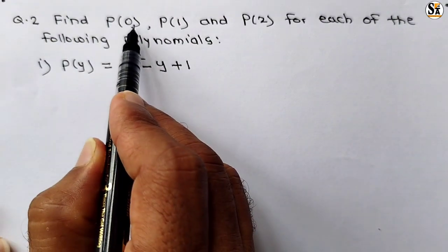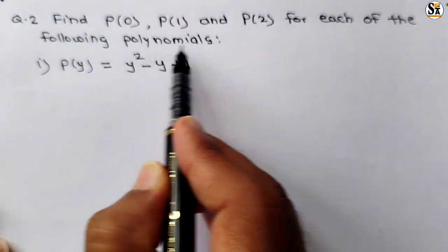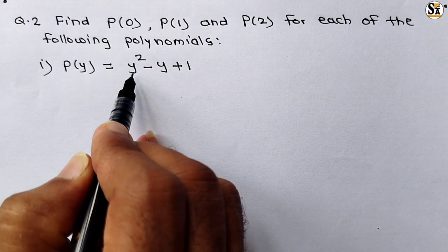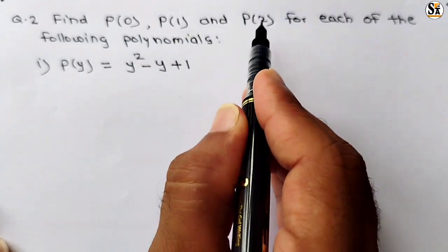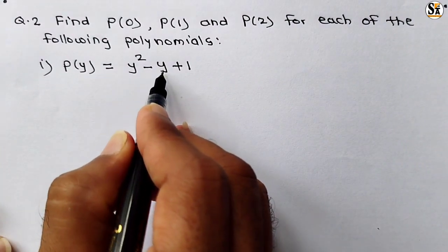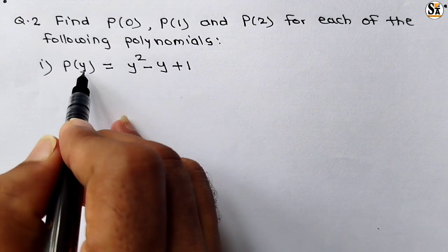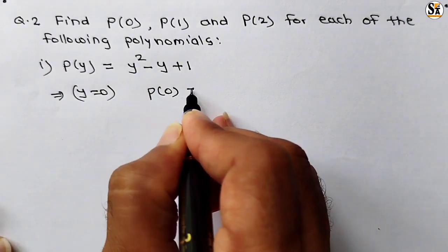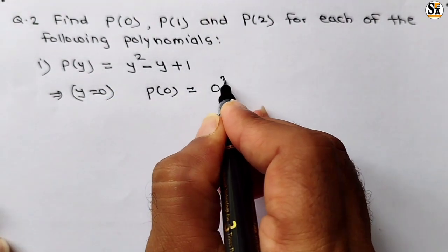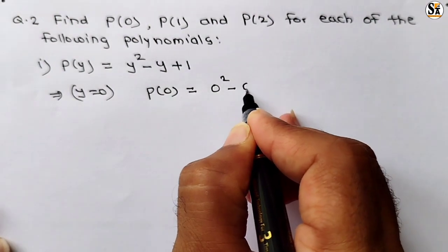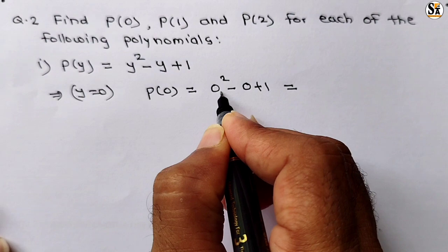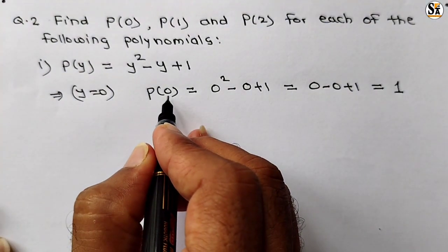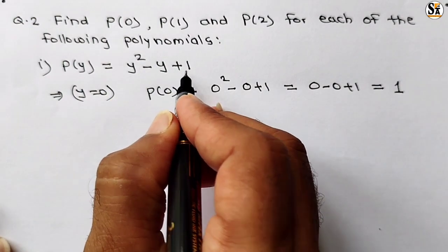Now see question 2: find p(0), p(1), and p(2) for each of the following polynomials. We have to put the value of the variable into each polynomial. In the first polynomial, variable is y: p(y) = y² minus y plus 1. Put y equal to 0: p(0) equals 0² minus 0 plus 1, which is 0 minus 0 plus 1. So our answer is 1.